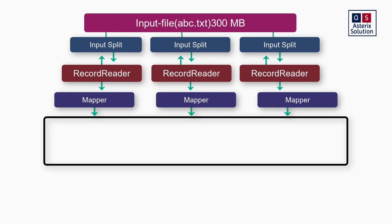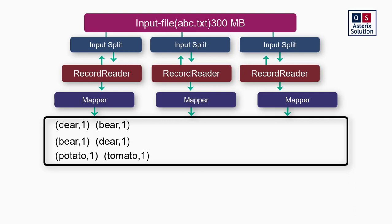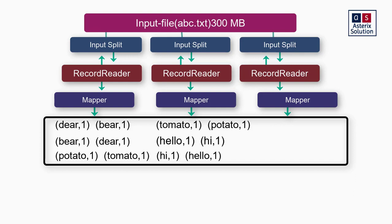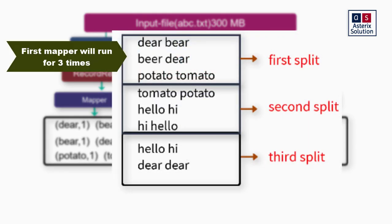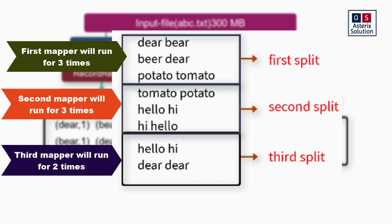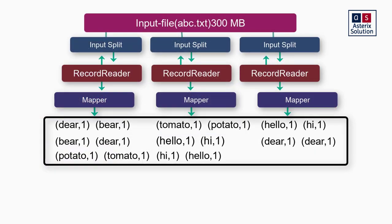For example, the line 'deer beer' through to 'potato tomato' was in the first block; 'tomato potato' through 'hello hi' was in the second block; and 'hello hi hi hello' through 'dear dear' goes into the third block. So the first mapper will run three times, the second mapper will run three times, and the third mapper will run only two times. The work of the mapper is to emit how many times a word is repeated.